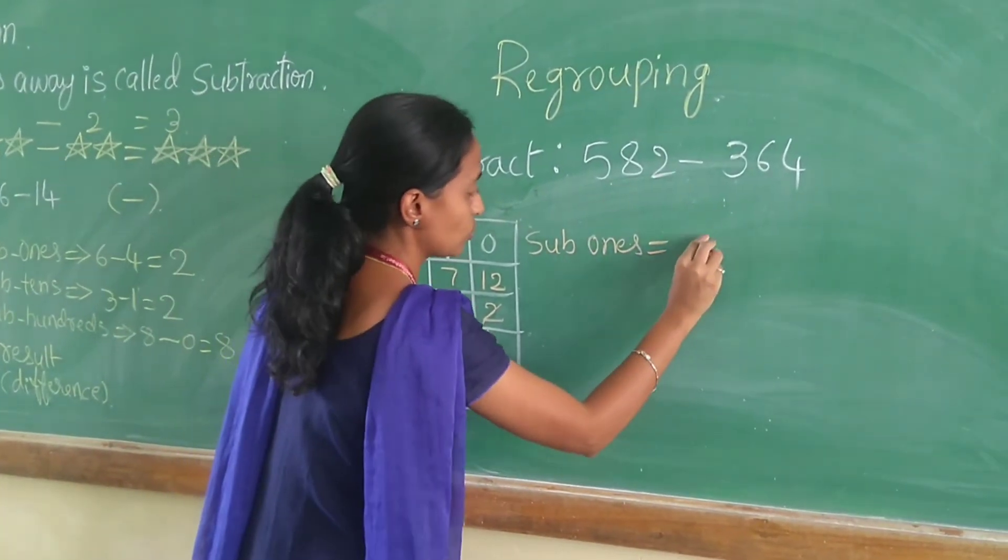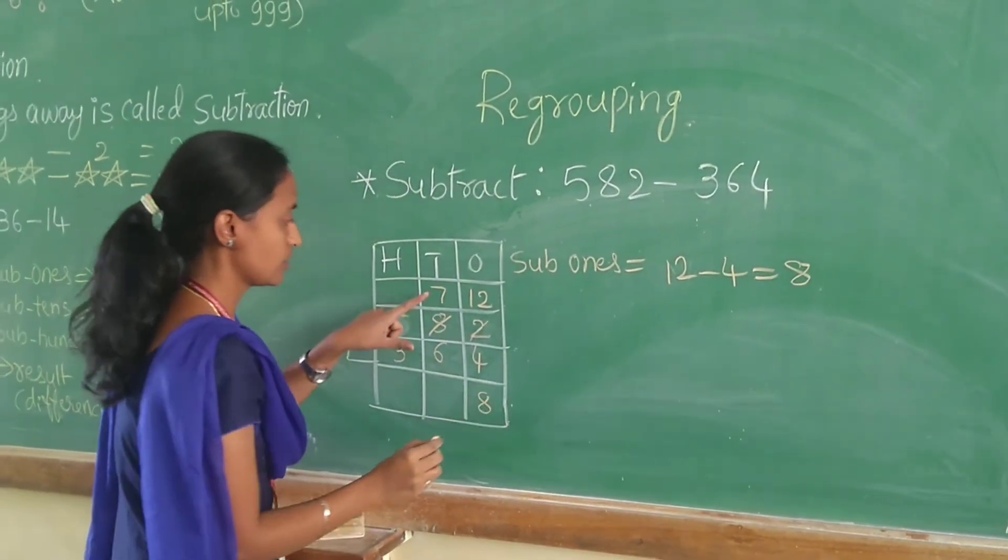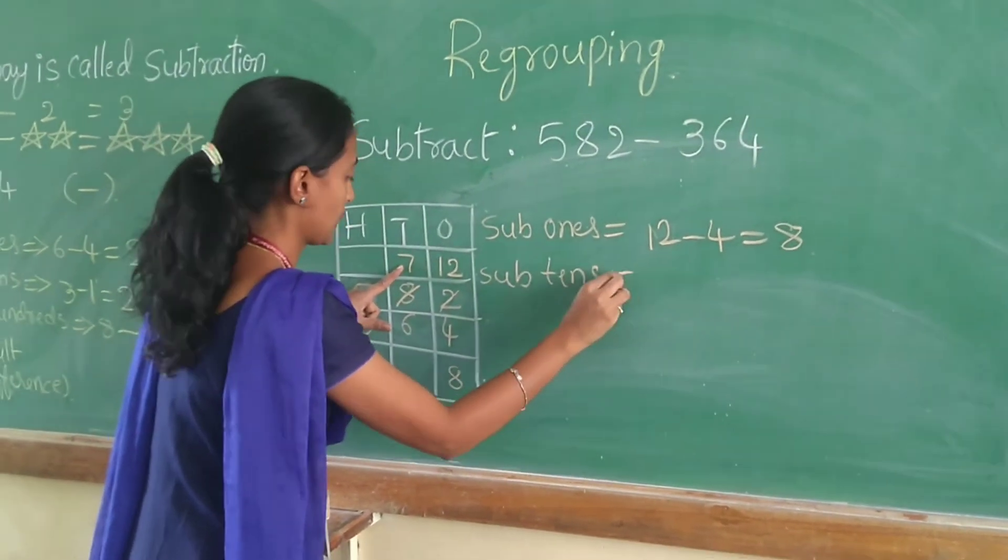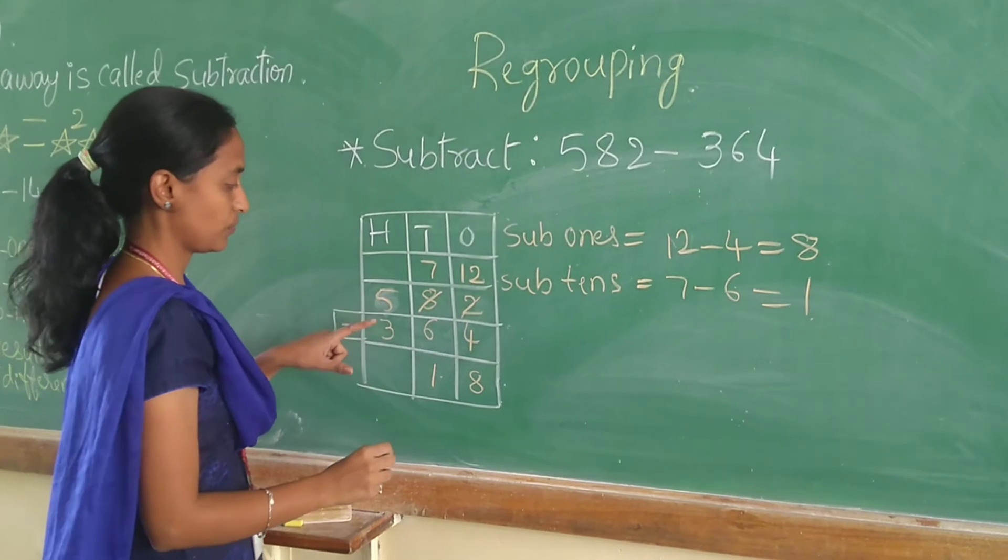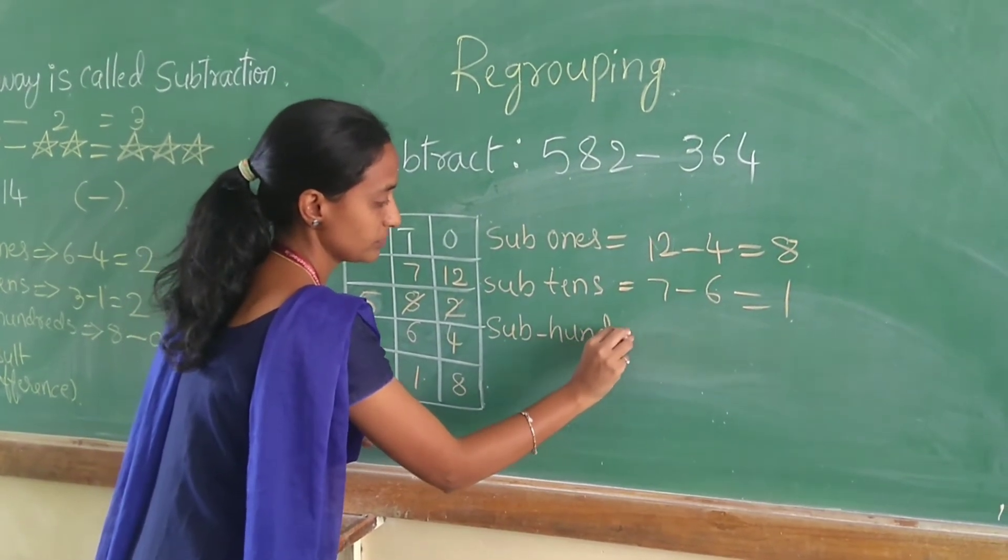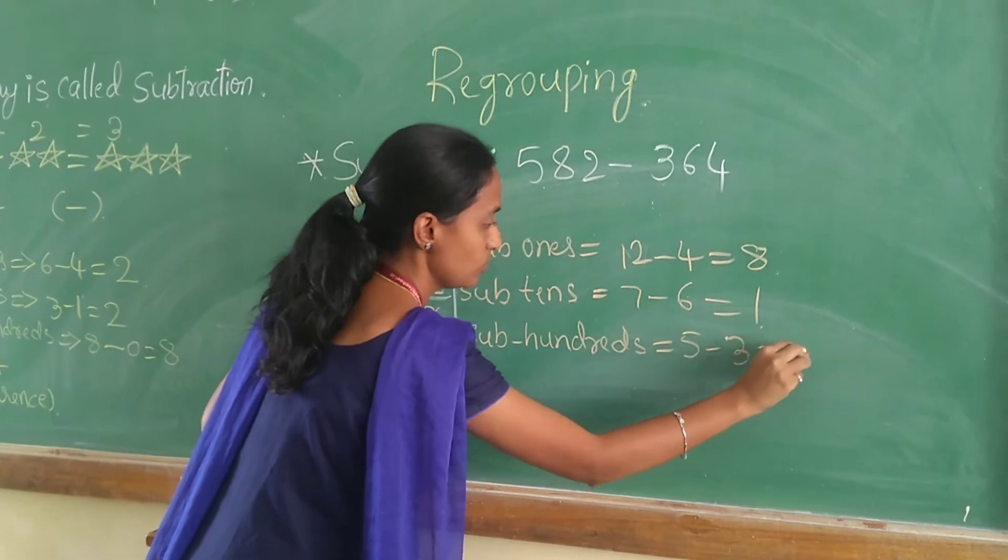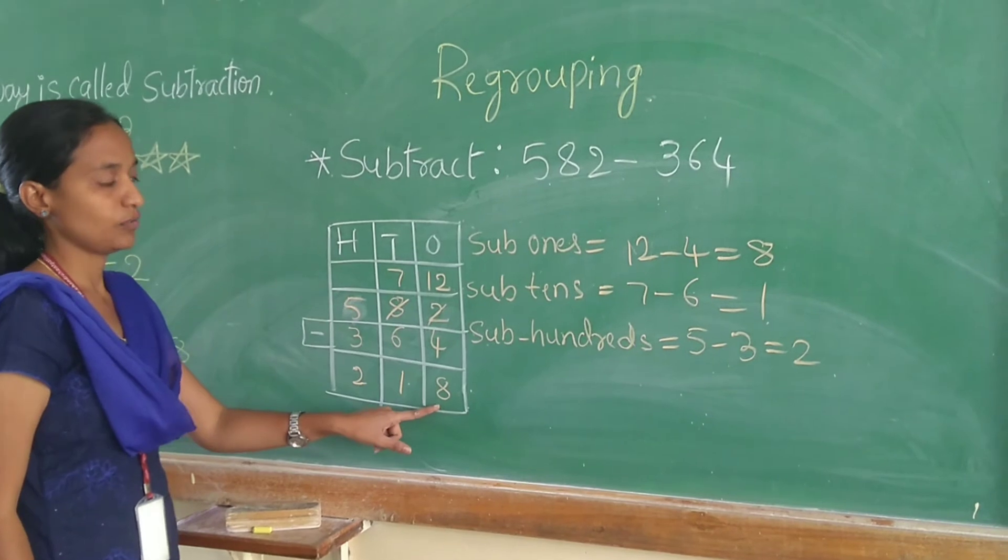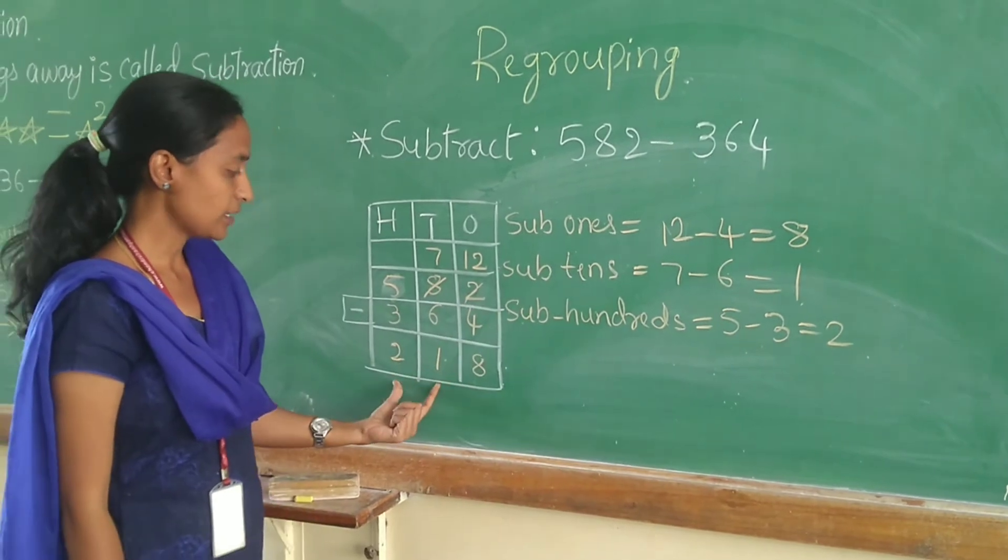12 minus 4 is equal to 8, so place here 8. Subtract 10s. 7 minus 6 is equal to 1. Then subtract 100s. 5 minus 3 is equal to 2. So we will get answer 218. When you subtract 364 from 582, you will get 218.